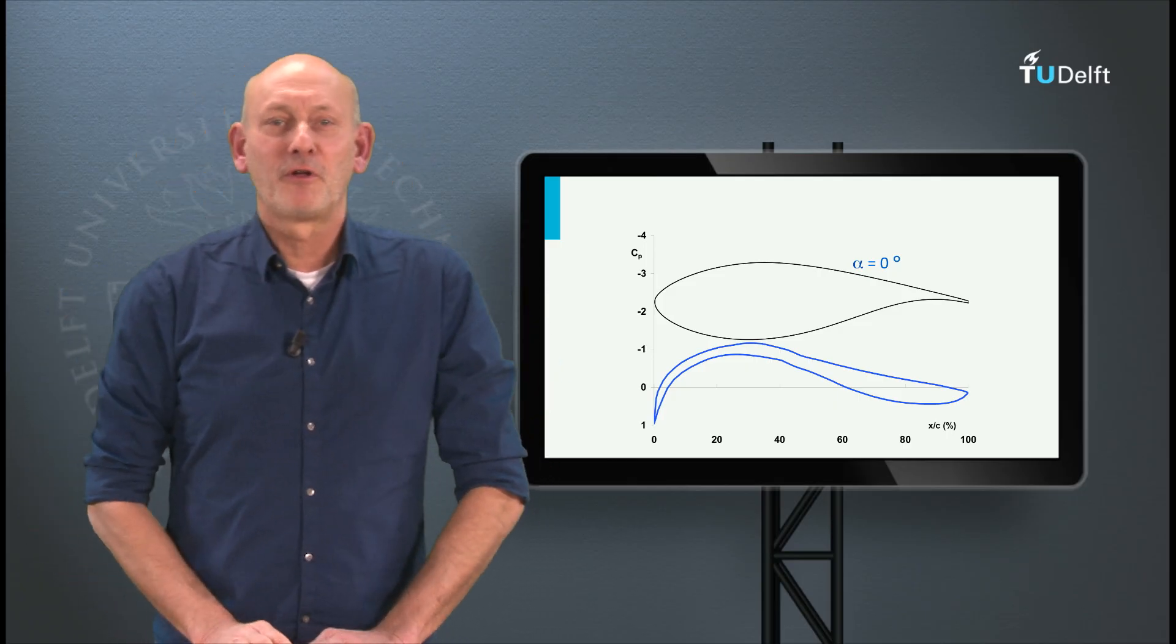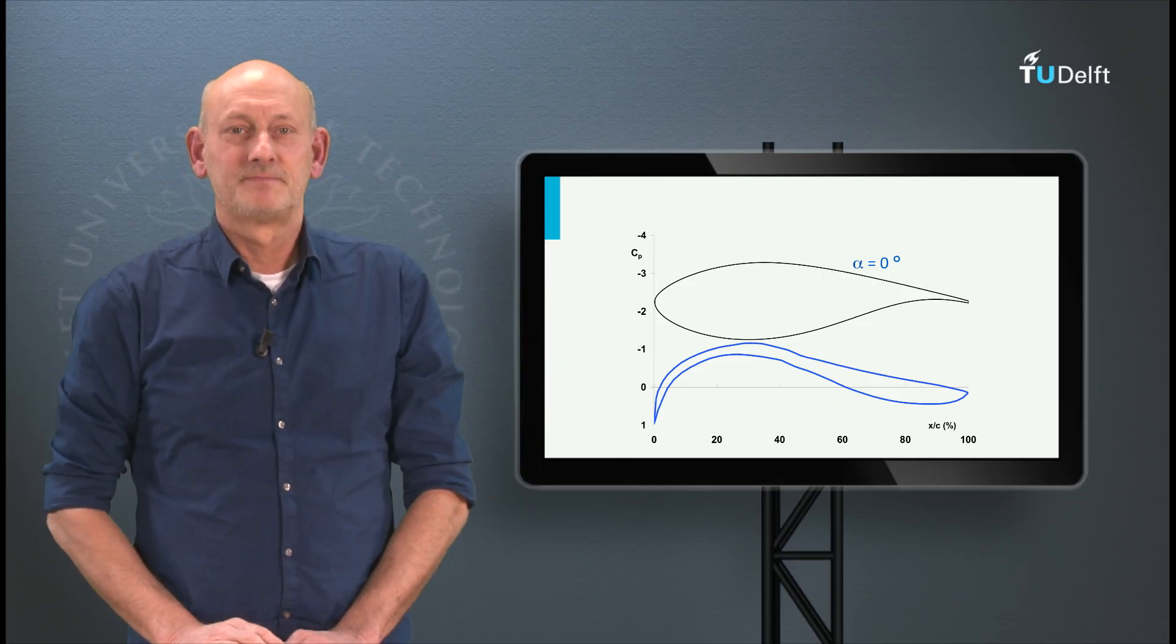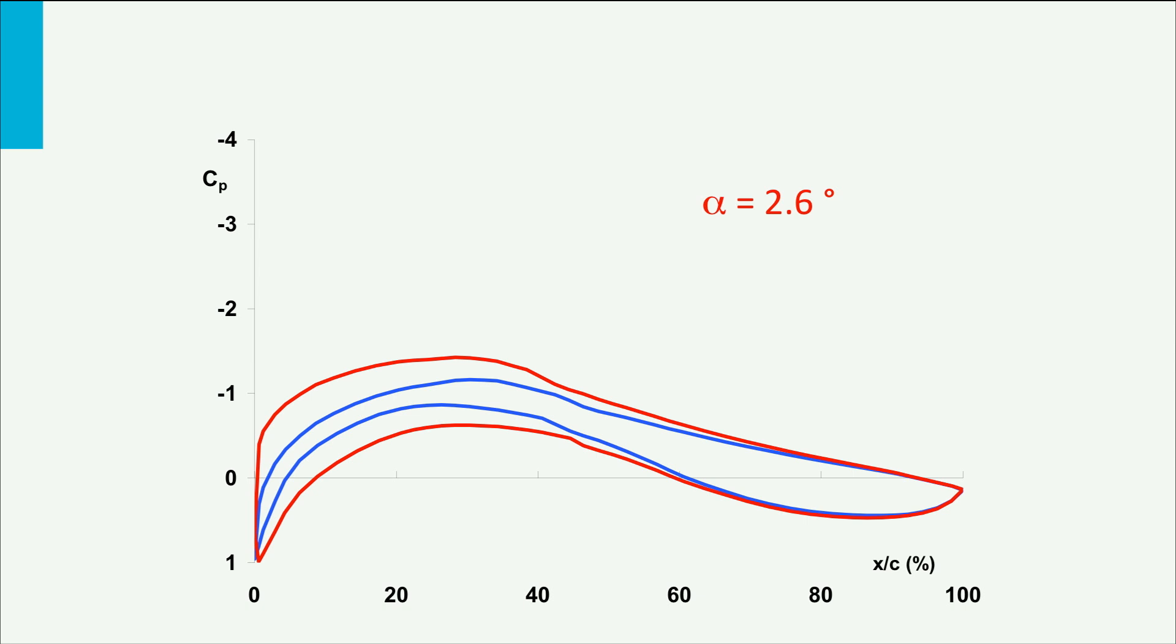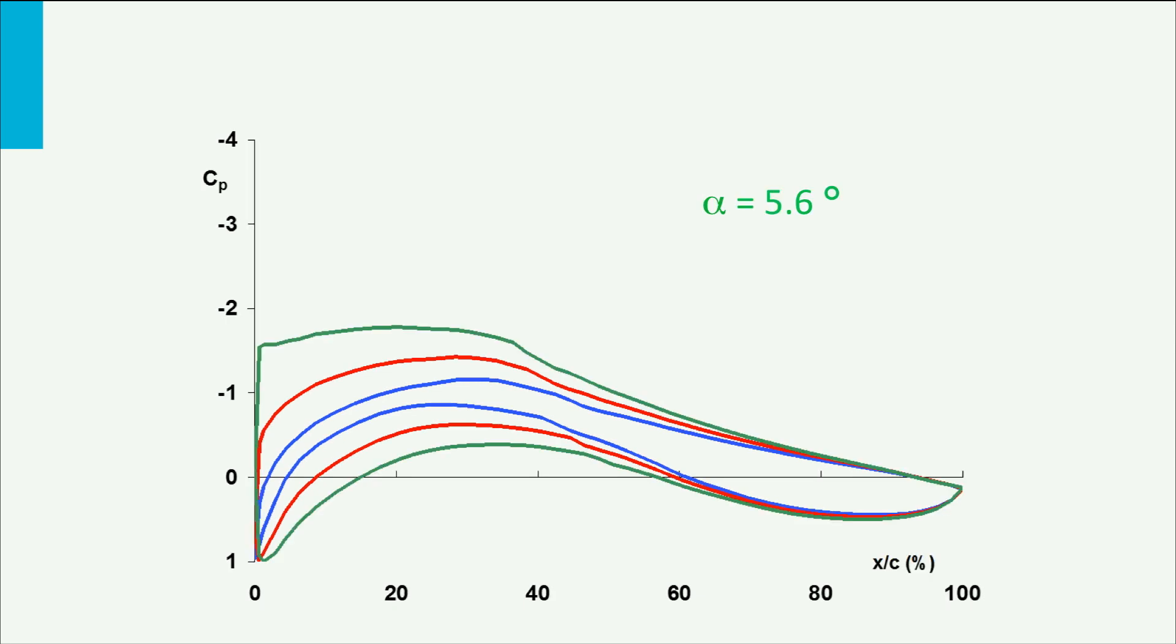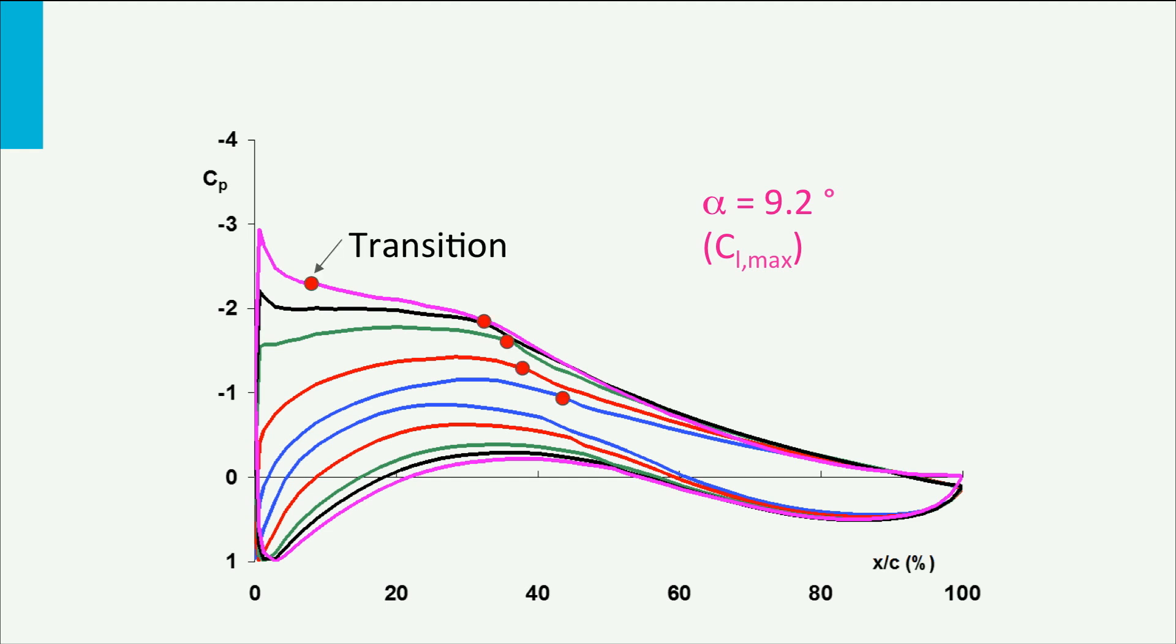Back to the new airfoil and its pressure distributions. As the angle of attack increases, the pressures on the suction side decrease and on the pressure side increase. The transition location on the upper surface moves forward. At 9.2 degrees angle of attack a small pressure peak forms on the leading edge. This peak destabilizes the boundary layer in such a way that transition jumps to the leading edge of the airfoil.